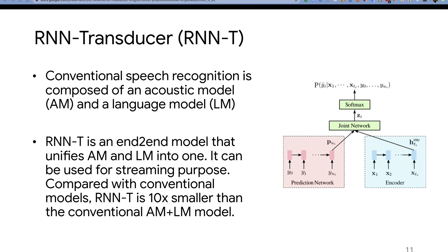But in the last one or two years, they're trying to improve recognition models by introducing end-to-end models. RNN-T is such an end-to-end model that unifies the acoustic model and language model into one. It can be used for streaming purposes. Compared with the conventional model, a big advantage of RNN-T is that it is 10 times smaller than the conventional AM plus LM models.